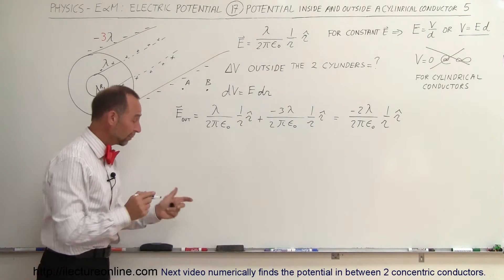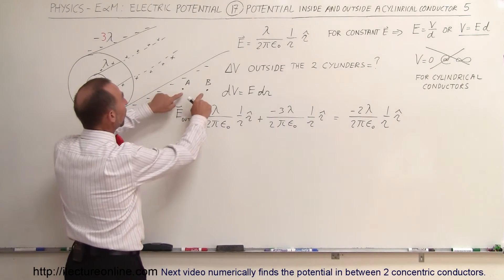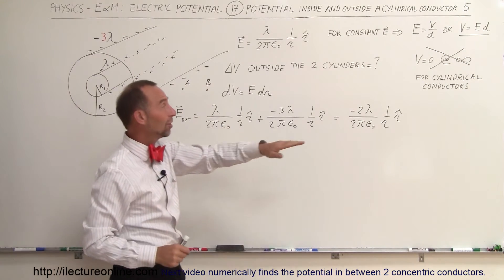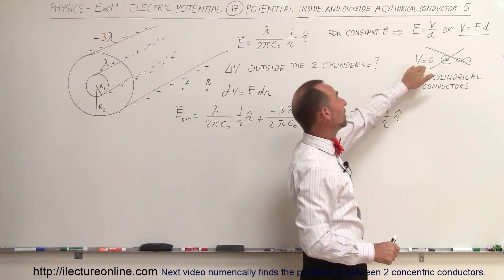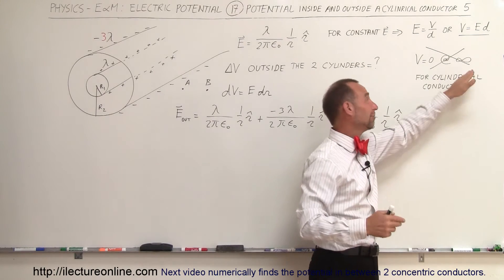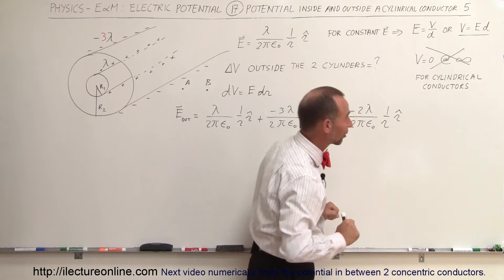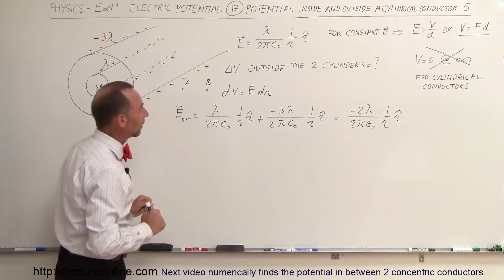Now we can try to find the potential difference between any two points outside the second cylinder, again with the assumption that we cannot assume that V equals zero, the potential equals zero at infinity. That doesn't work for cylindrical conductors.